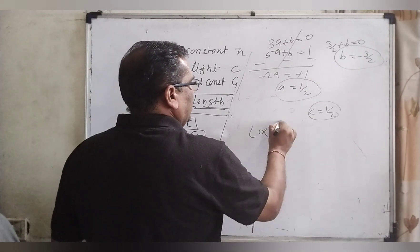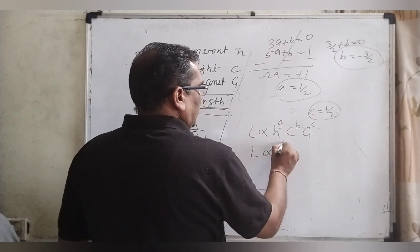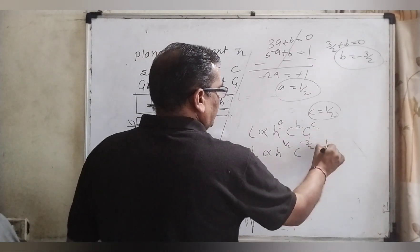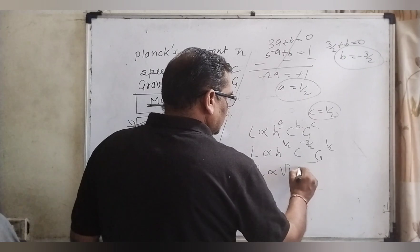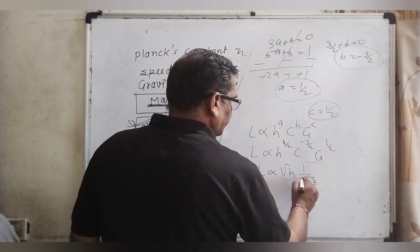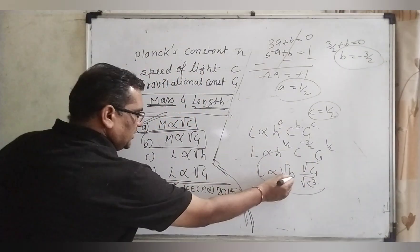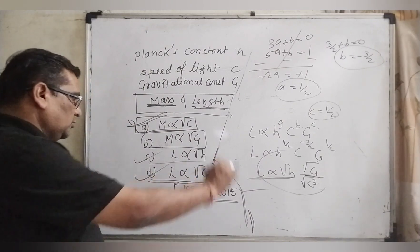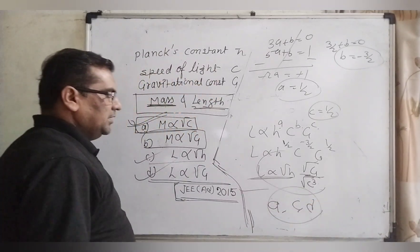So L is proportional to h^(1/2) · c^(−3/2) · G^(1/2), which can be written as √h · (1/c^(3/2)) · √G, or equivalently √h · (√G / √c³). Checking the options: L is directly proportional to √h — correct, option C. L is directly proportional to √G — correct, option D. So the correct answers are options A, C, and D.